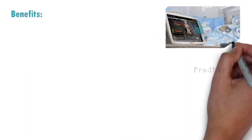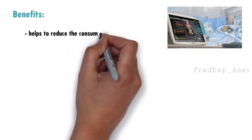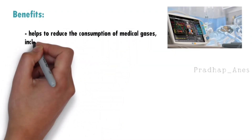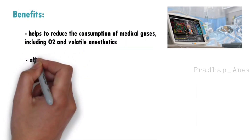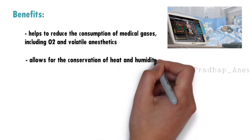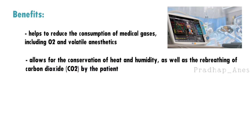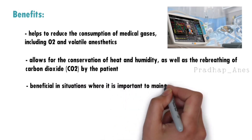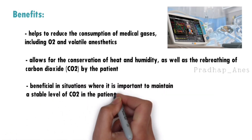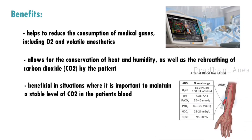This type of circuit offers several advantages in certain clinical scenarios. It helps to reduce the consumption of medical gases, including O2 and volatile anesthetics, which can be cost-effective. The closed circuit also allows for the conservation of heat and humidity. Additionally, closed circuits are beneficial in situations where it is important to maintain a stable level of CO2 in the patient's blood, such as during anesthesia or in patients with specific respiratory conditions.